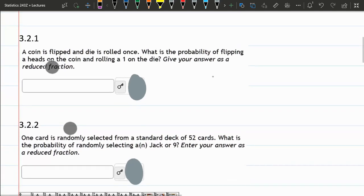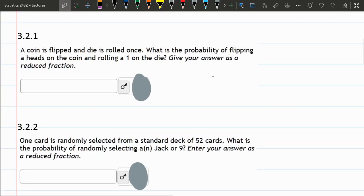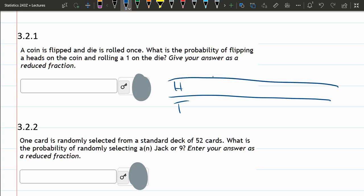So let's get started here. These are pretty similar questions, so we'll do both at the same time. Here a coin is flipped and a die is rolled. A coin has two outcomes, heads and tails.